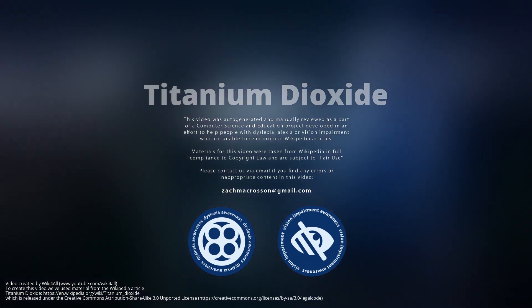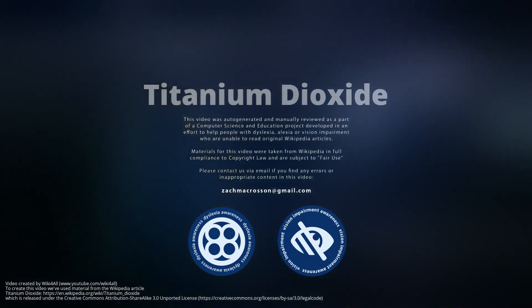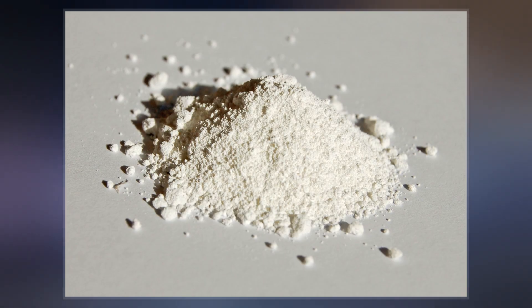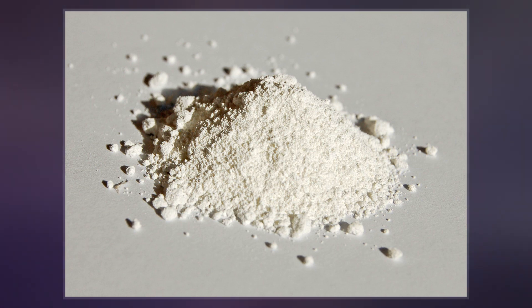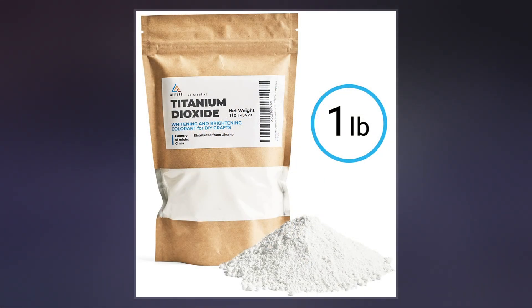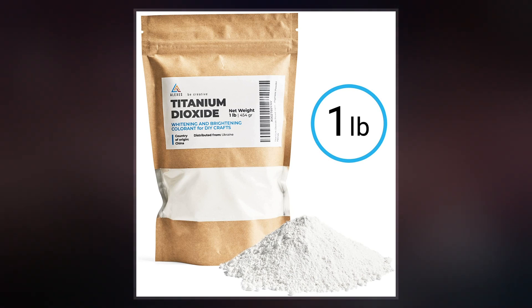Titanium dioxide, also known as titanium oxide or titania, is the inorganic compound with the chemical formula TiO2. When used as a pigment, it is called titanium white, pigment white 6, or CI 77891.